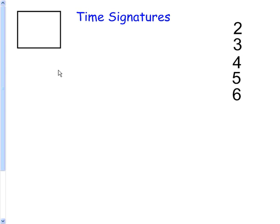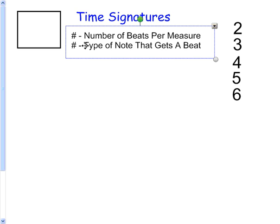Welcome to learning your time signatures. Now time signatures are how we keep consistent knowledge of what notes are going to play in a measure. Most of the time it will tell you two things: the number of beats per measure and the type of note that gets a beat.